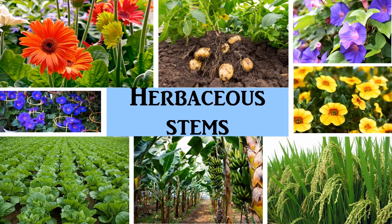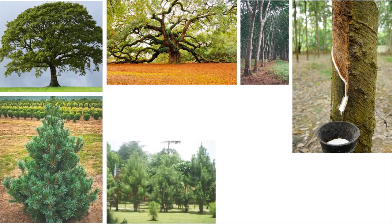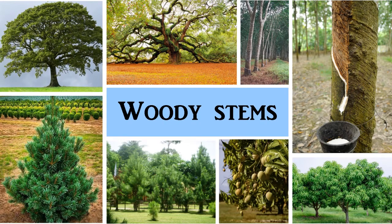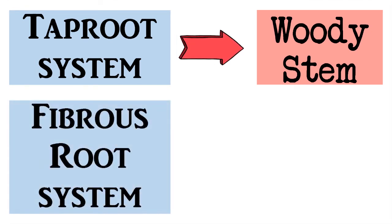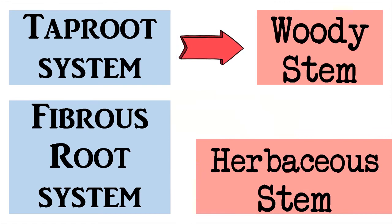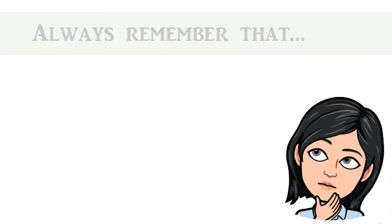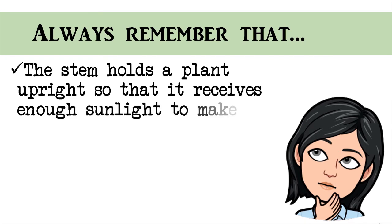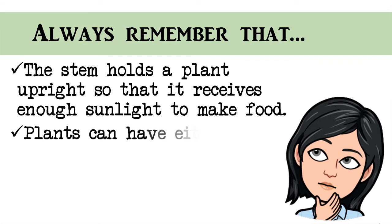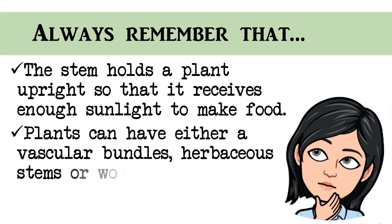Oak trees, rubber trees, pine trees, and mango trees have woody stems. These stems are hard and do not bend easily. Plants that have a taproot system usually have woody stems, whereas plants that have a fibrous root system usually have herbaceous stems. We should always remember that the stem holds a plant upright so that it receives enough sunlight to make food. Plants can have either vascular bundles, herbaceous stems, or woody stems.